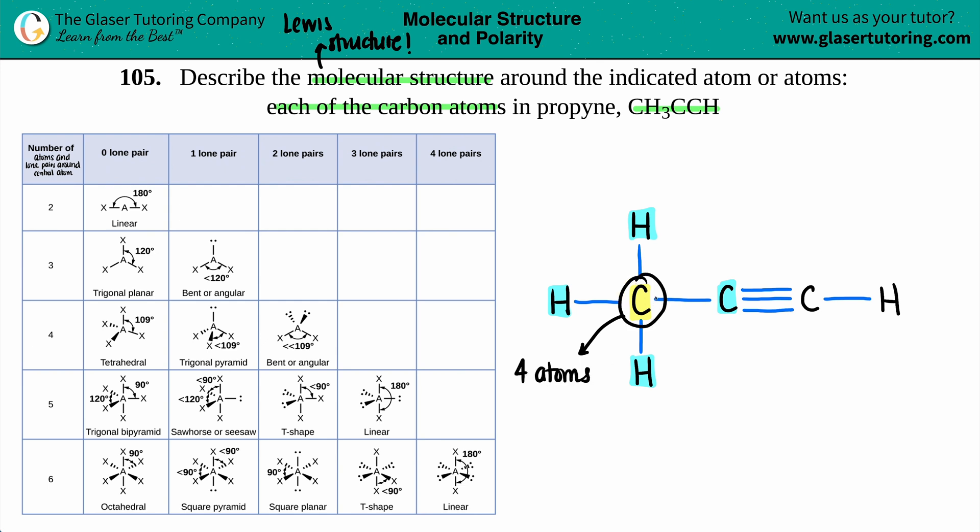And how many lone pairs does this carbon have? None. I don't see any dots. The dots are the lone pairs. So four atoms and zero lone pairs. So the first thing we have to do is just find out what territory we're in, whether we're two, three, four, five, or six. And that comes from adding up the four plus the zero. So we know that we're in general land of four.